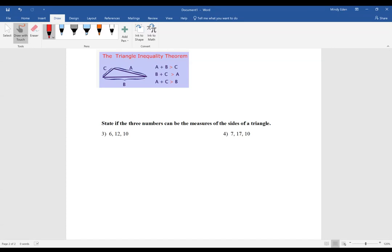Let's look at my third example. It says, state if these three numbers can be the measures of the sides of a triangle. That goes back to the Triangle Inequality Theorem. I need to check three different scenarios.